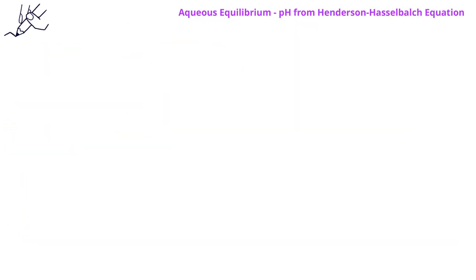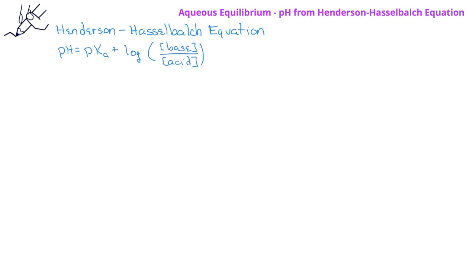When wanting to know the pH of a buffer solution, there is a much faster way. This is known as the Henderson-Hasselbalch equation, which states that pH equals the pKa for the weak acid plus the log of the ratio of the concentration of the base divided by the concentration of the acid.